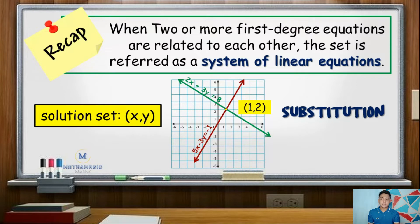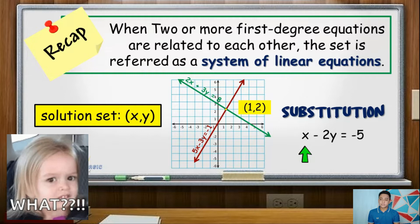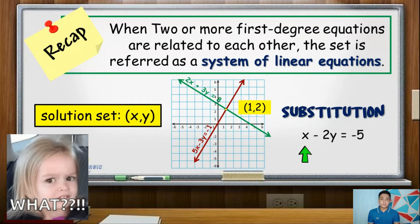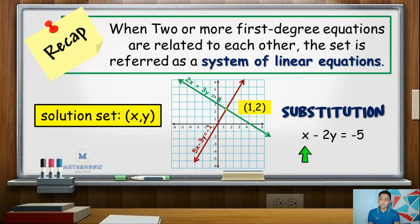This method is recommended when at least one of the two equations has a variable with a numerical coefficient of 1. The process involves rewriting one equation in terms of one variable and then substituting it into the other equation. Now for you to better understand this, here is an example.